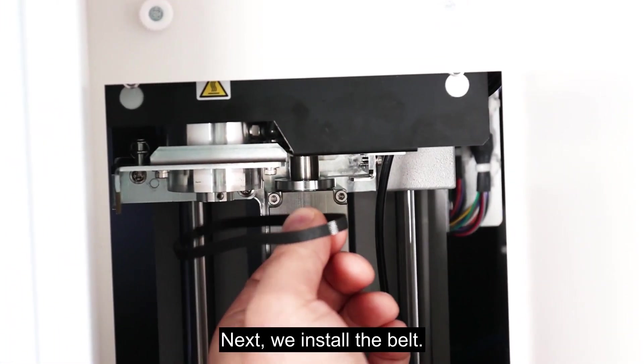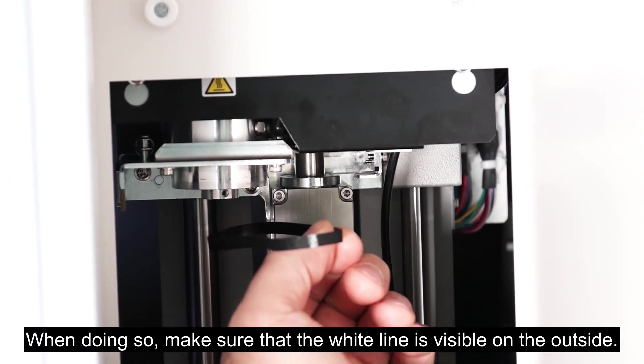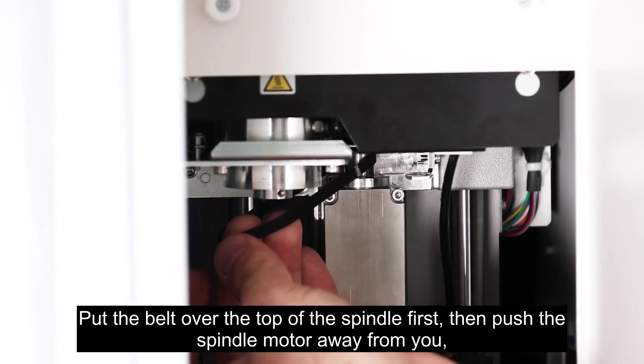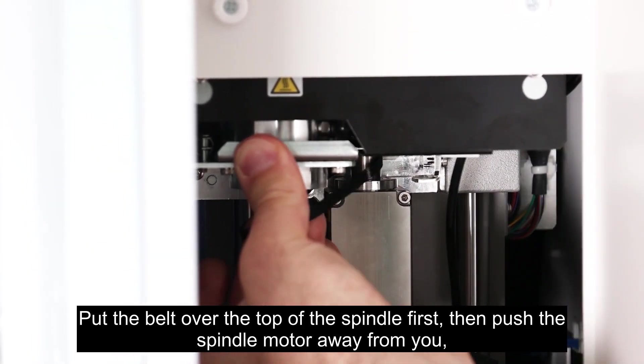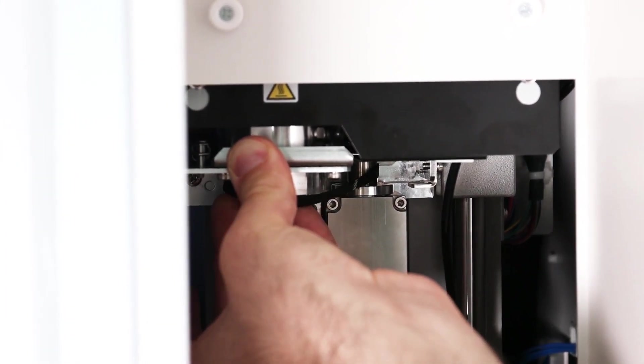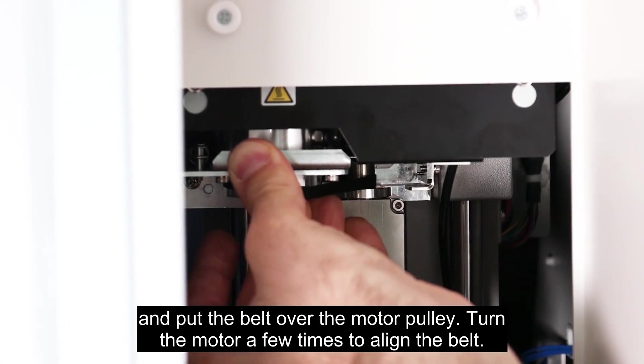Tighten the screws in a diagonal pattern and be careful not to over tighten. Next we install the belt. When doing so, make sure that the white line is visible on the outside. Put the belt over the top of the spindle first. Then push the spindle motor away from you and put the belt over the motor pulley.